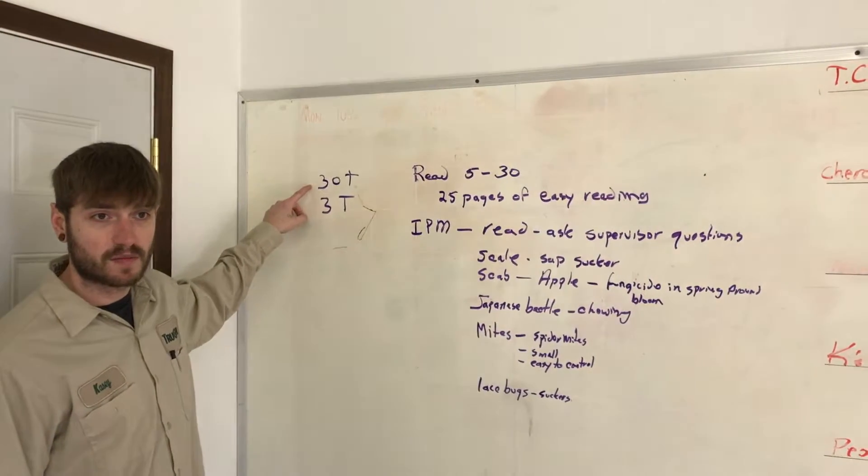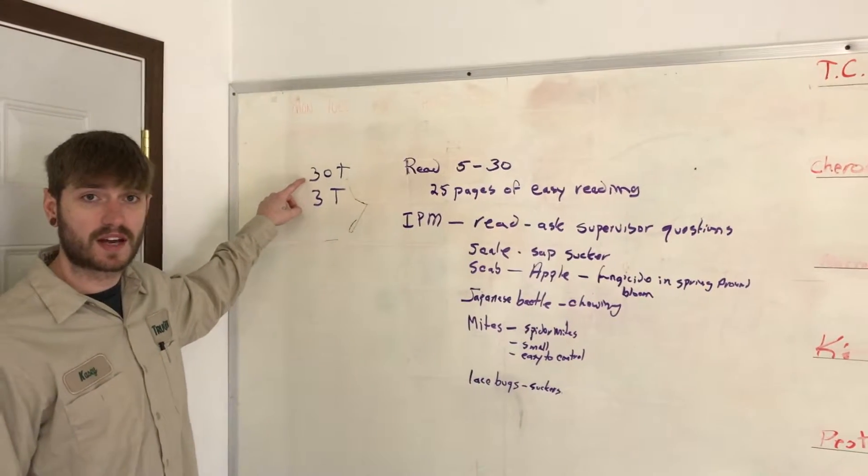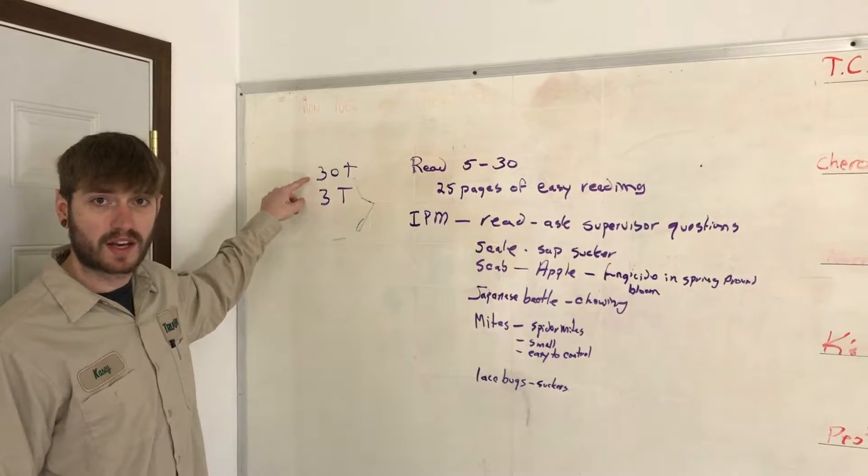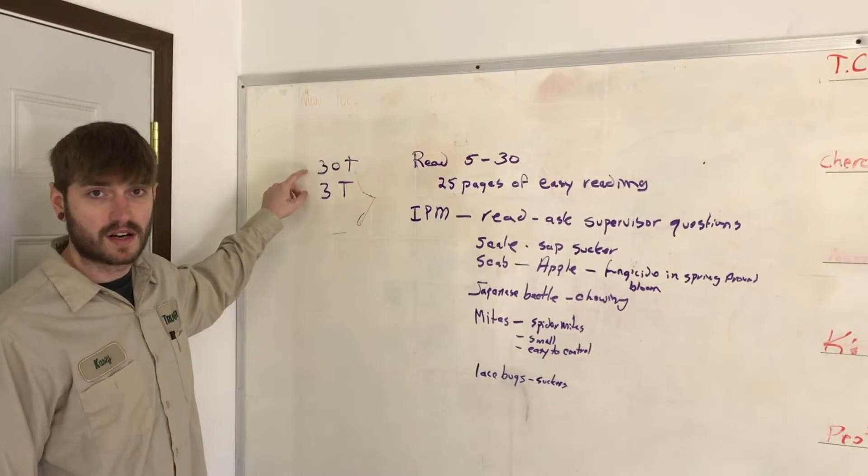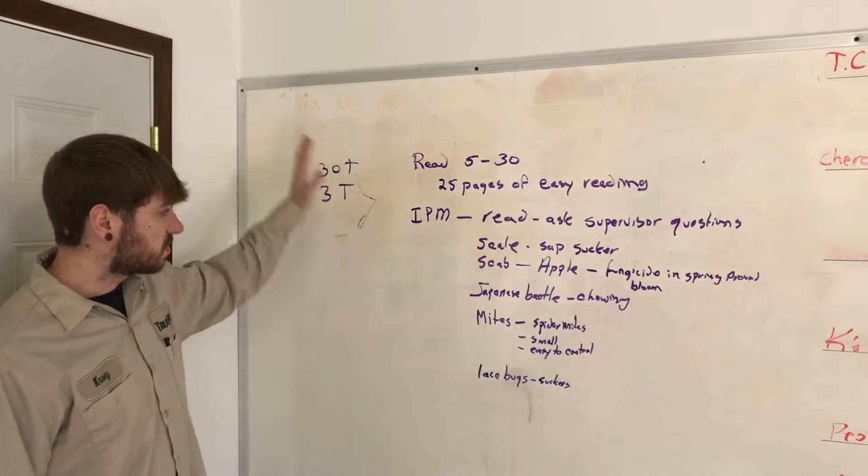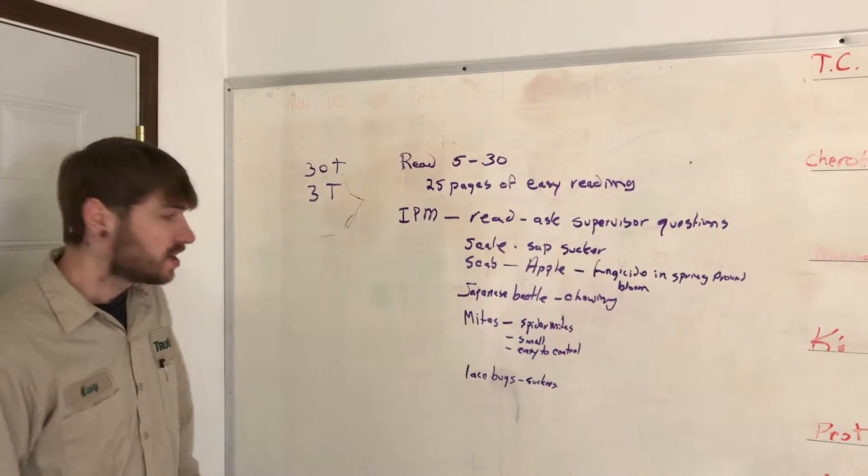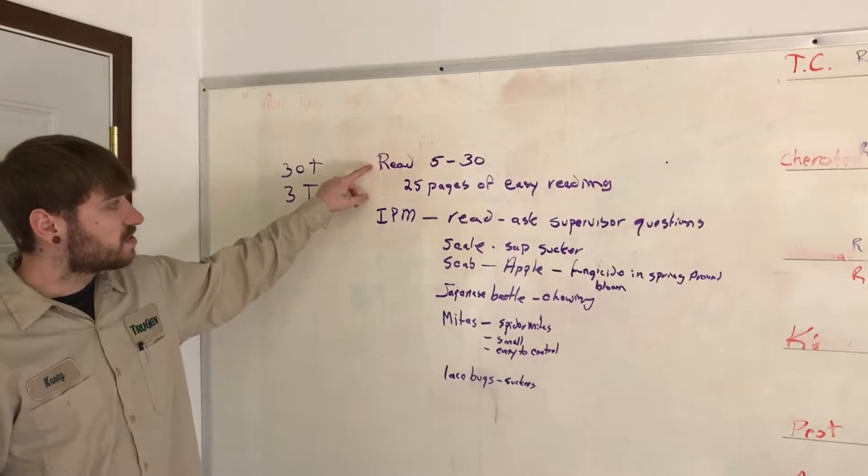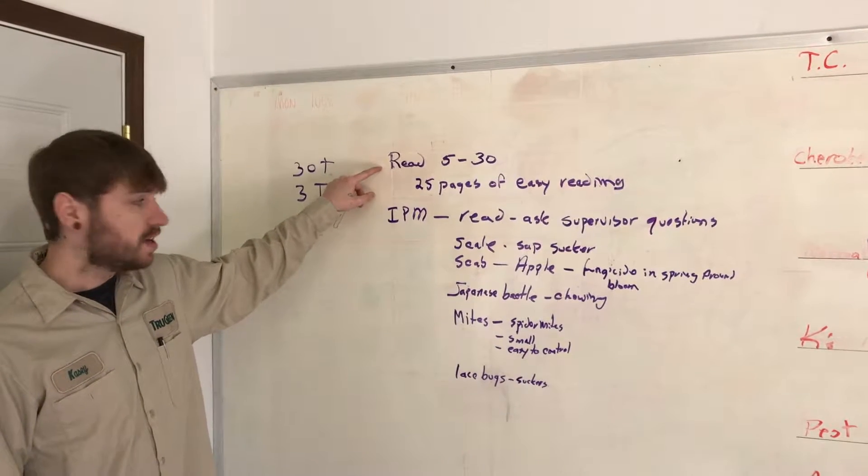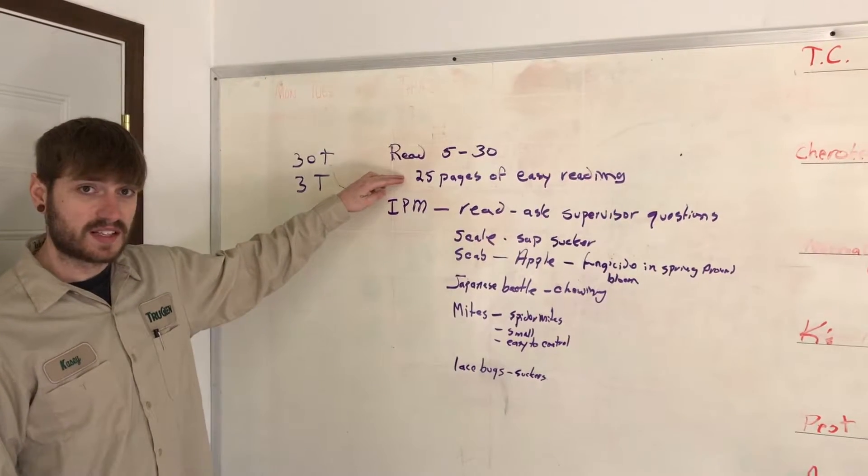The 3OT is a turf and ornamental part, and that helps us get our reciprocator's license in primarily Nebraska and South Dakota. It basically helps us cover the tri-state area here. It's going to be pages 5 to 30, and it's 25 pages of easy reading.